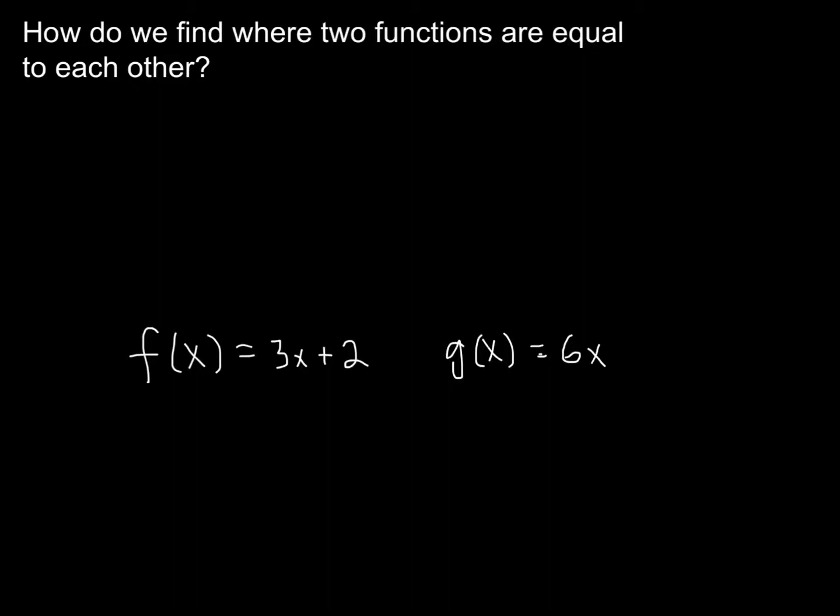All right, so hopefully there was an idea that two functions are going to be equal to each other when they are the same value. And a way that you might think of that is if you were graphing two functions, we know they are equal to each other when the two functions intersect. So if I had functions like that, they're going to intersect right at this point here.